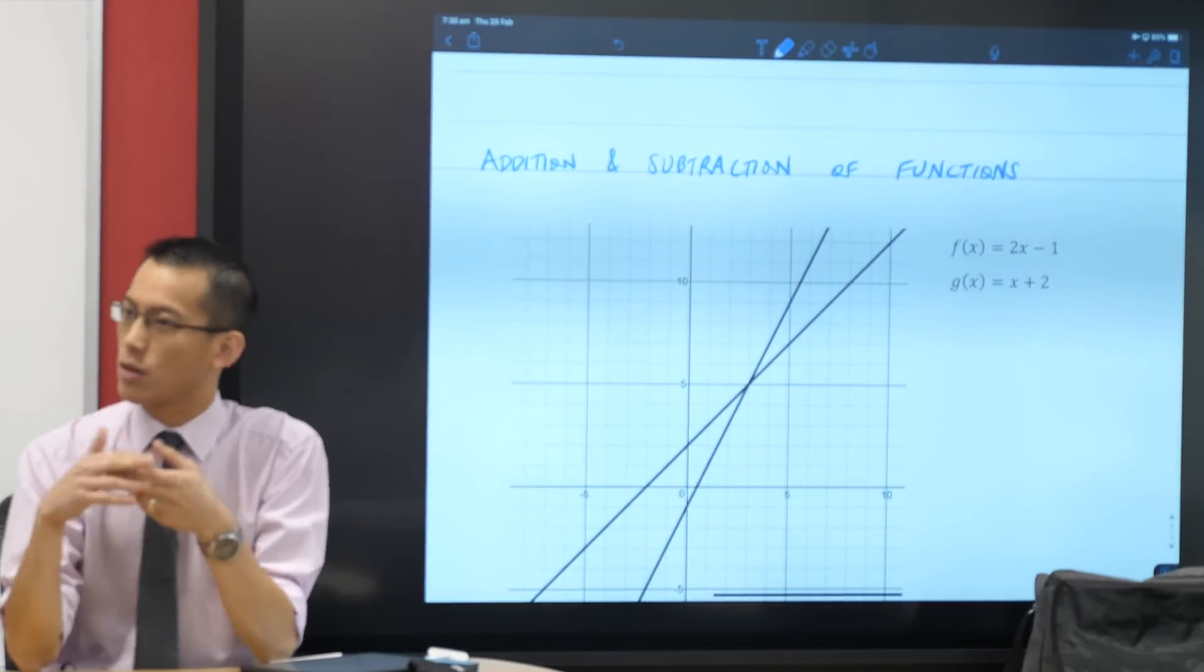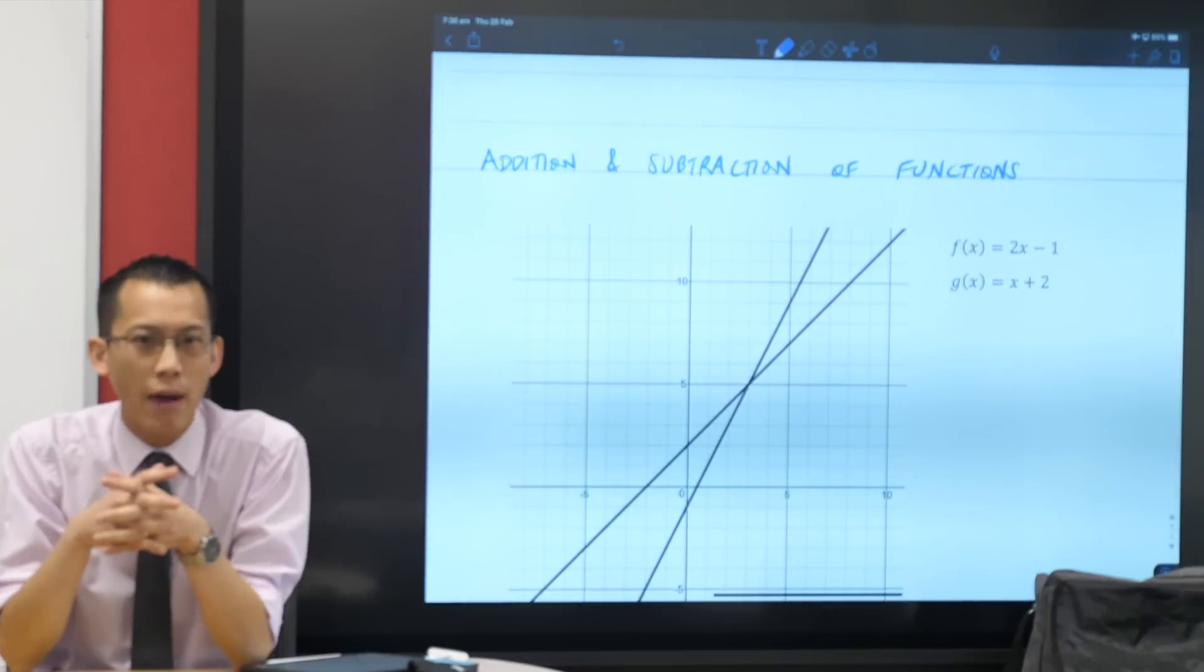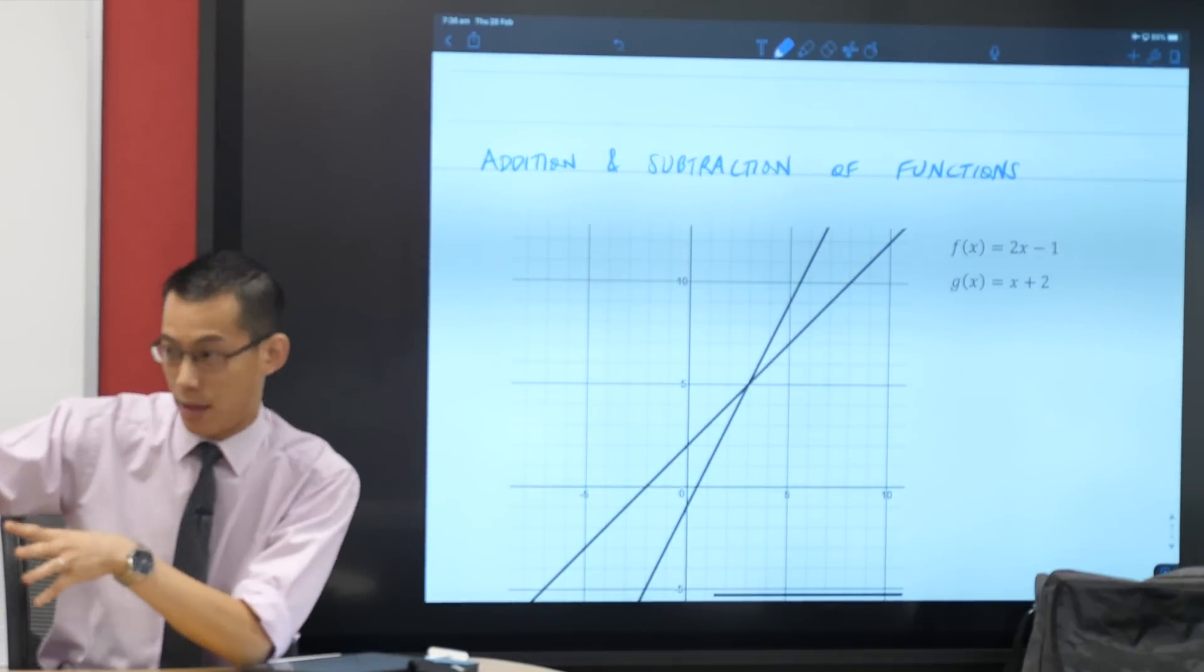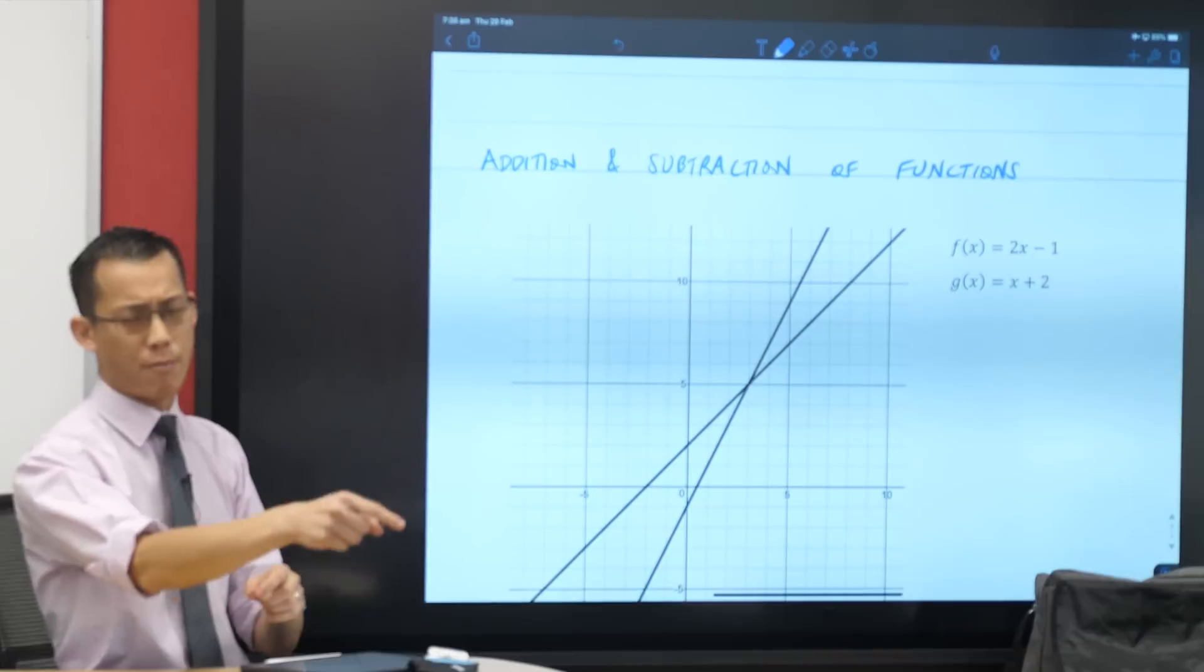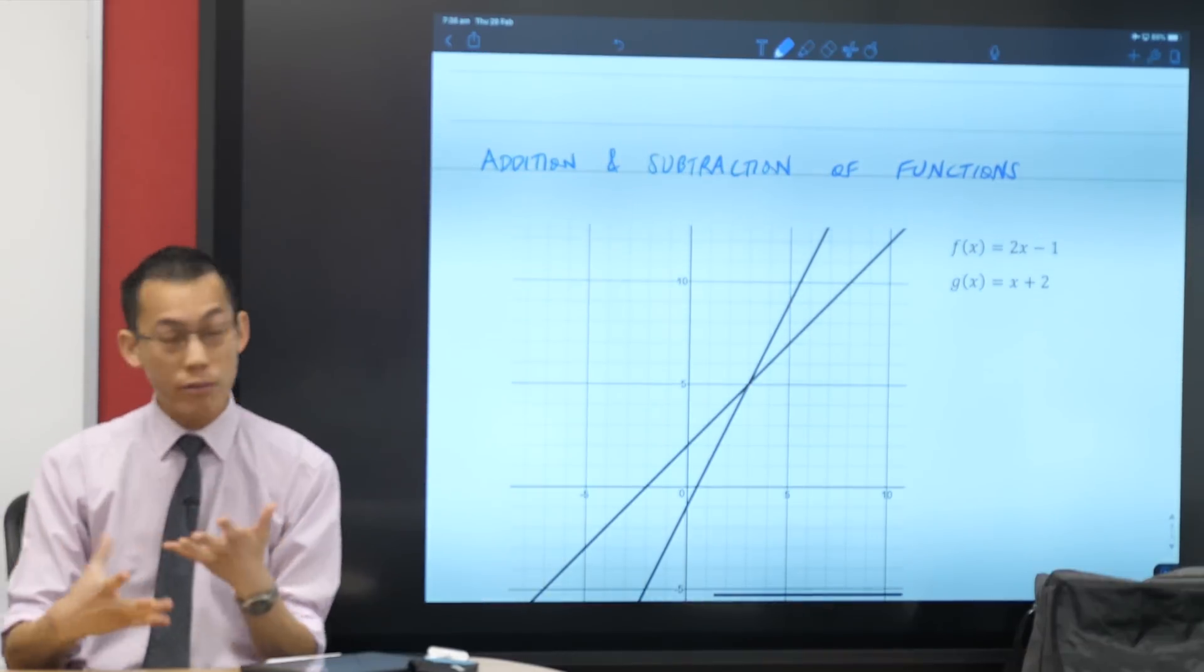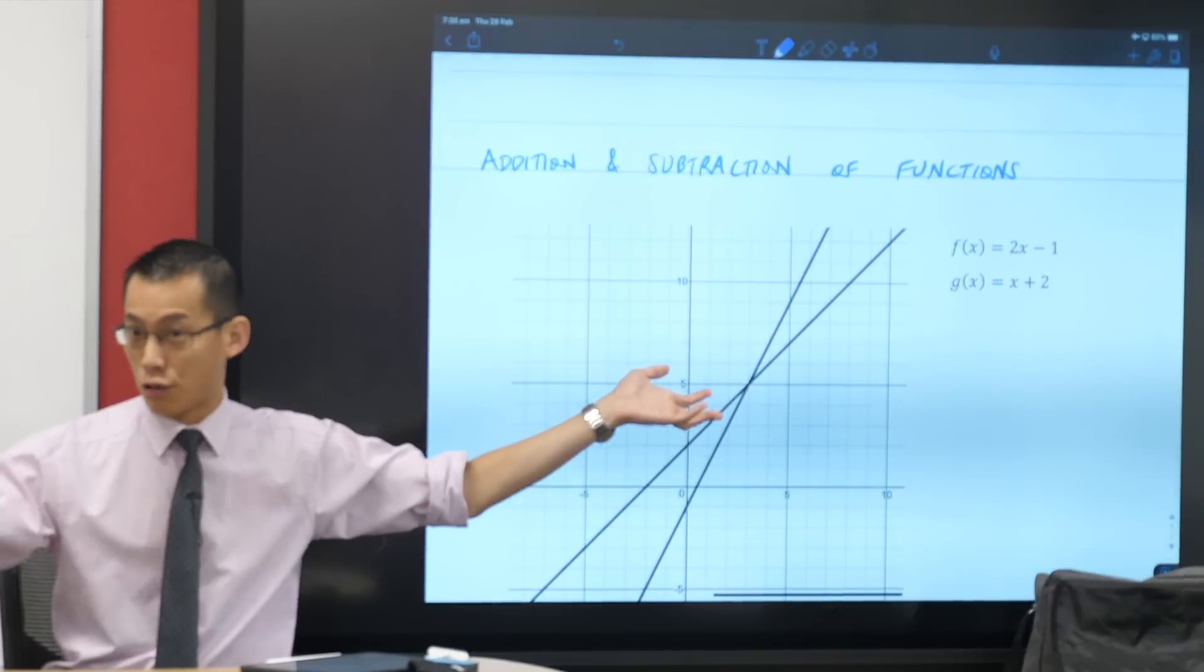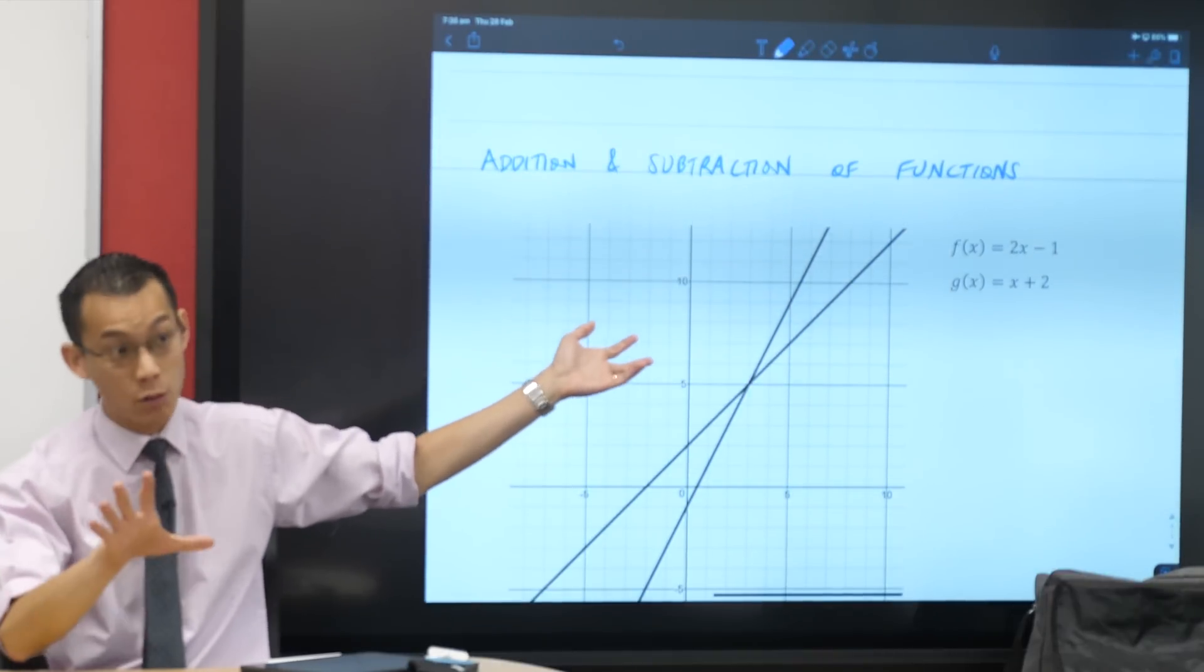And secondly, there are some functions which we will not know how to graph with the regular old methods that we've got. There's no quadratic formula. There's no just put this number in, you get the y-intercept. We will need to rely on this new method to graph these future functions that we haven't looked at yet.